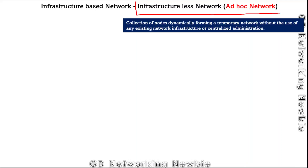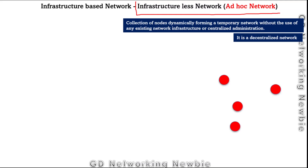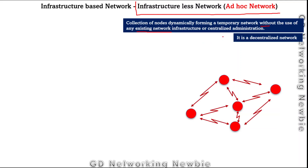In an ad hoc network, we again have nodes that can send and receive signals. These nodes form a network, but this time without using any existing infrastructure. They establish links and create a network on their own. Because there is no central entity, this is also known as a decentralized network.